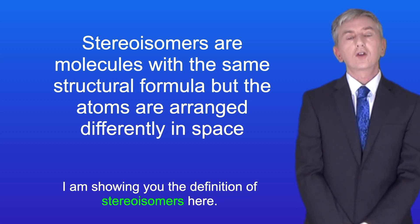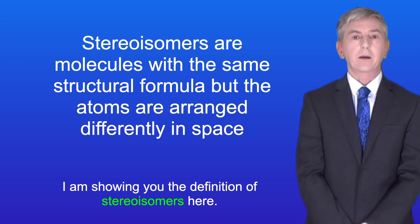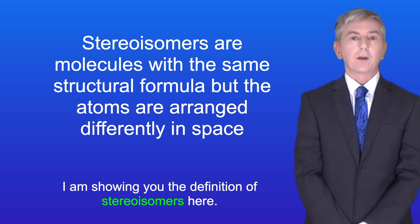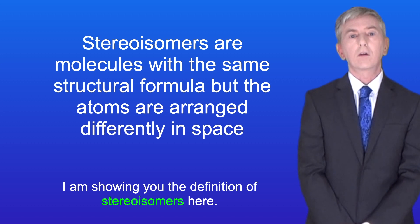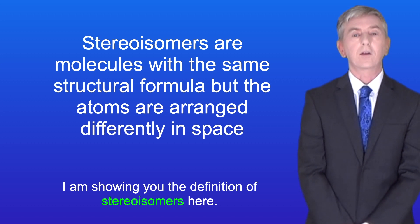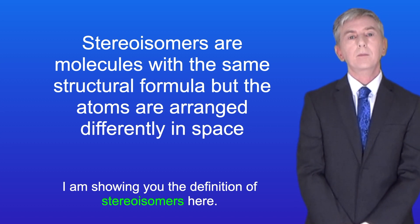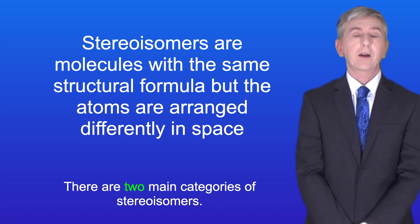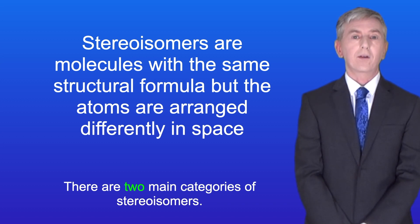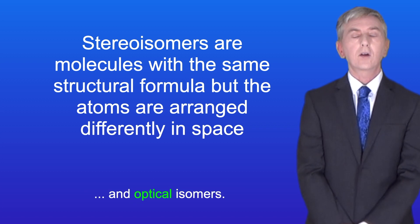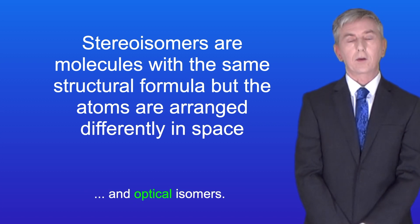Stereoisomers are molecules with the same structural formulae but the atoms are arranged differently in space. There are two main categories of stereoisomers: these are called geometrical isomers and optical isomers.